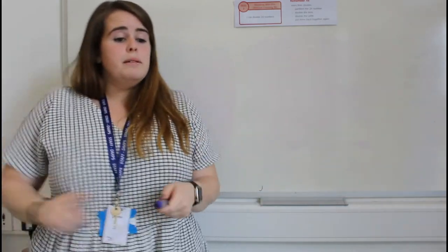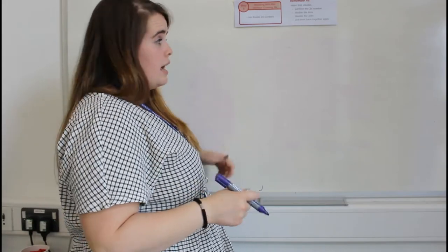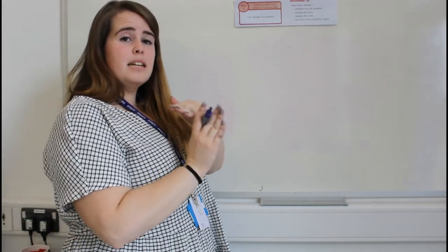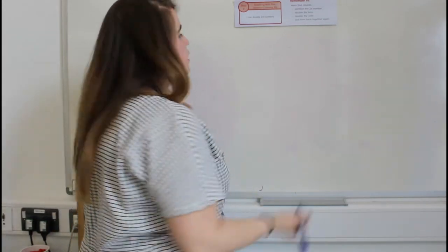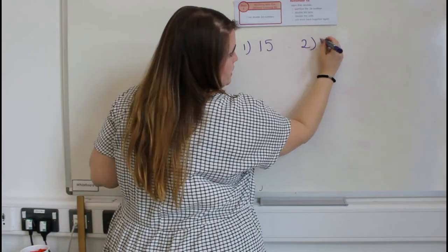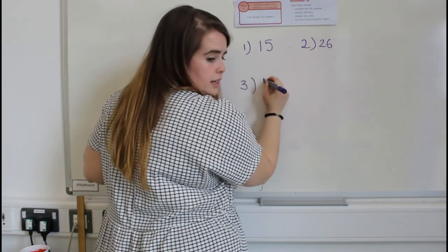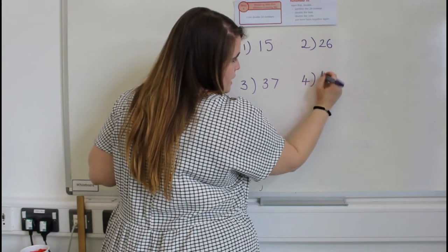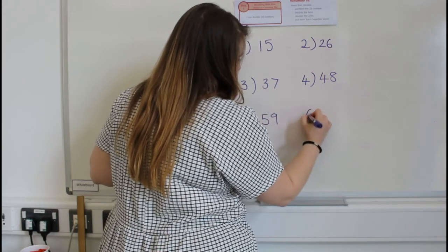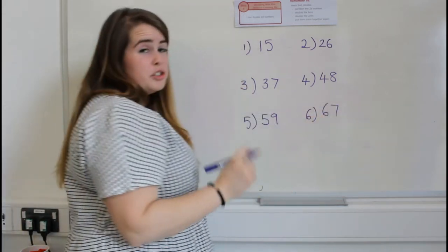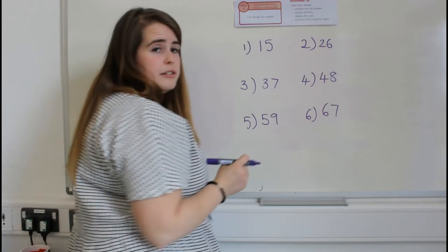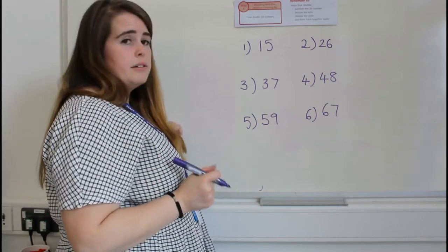These are going to be some challenge questions — you're going to have six of them. Pause the video and try doing a double diamond, adding the numbers together when you put them back. Number one: fifteen. Number two: twenty-six. Number three: thirty-seven. Number four: forty-eight. Number five: fifty-nine. And number six: sixty-seven. They do get a lot harder as you go — make sure you're checking your values of your tens and your ones. Pause the video now to have a try.